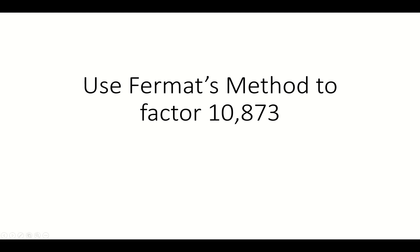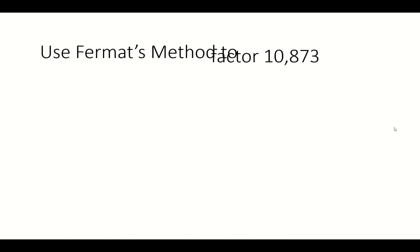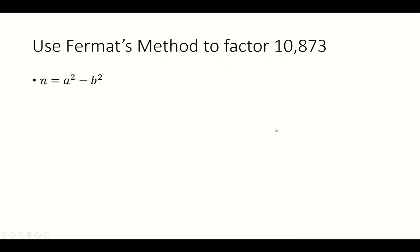We want to use Fermat's method to factor 10,873. So we're going to start off with the number n, which is 10,873. And that's going to be the difference of two squares, a squared minus b squared, which can be factored into a plus b times a minus b. So we want to find these two numbers.